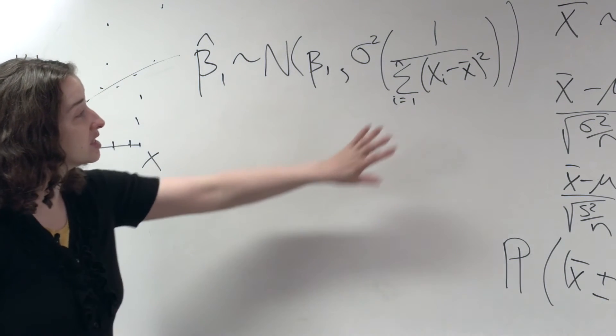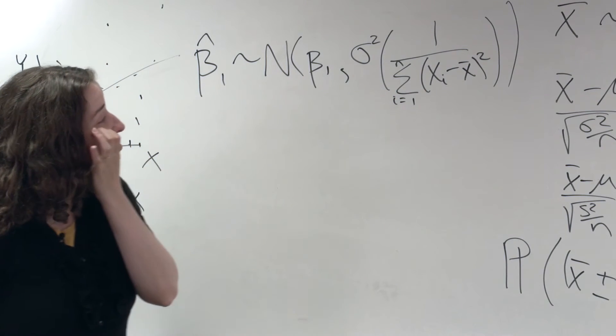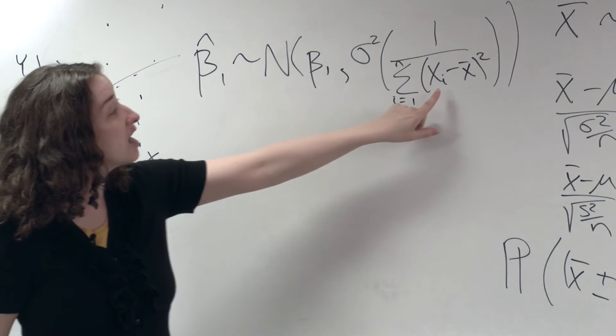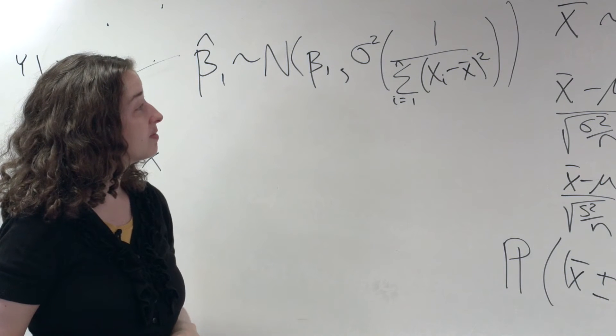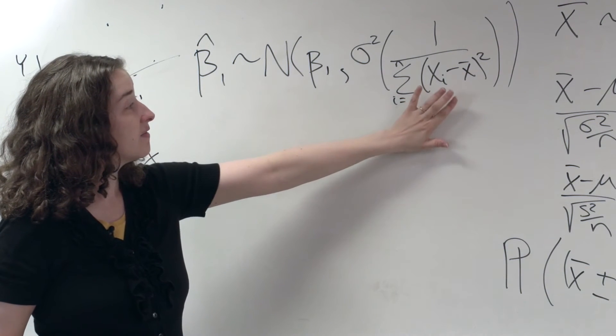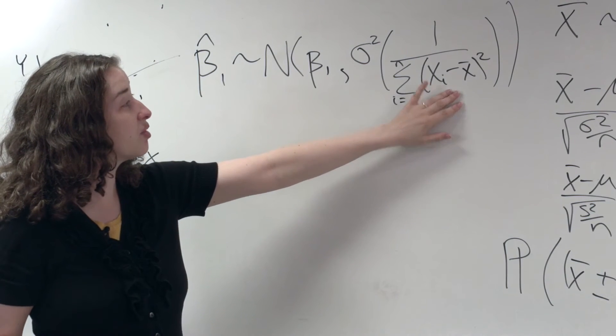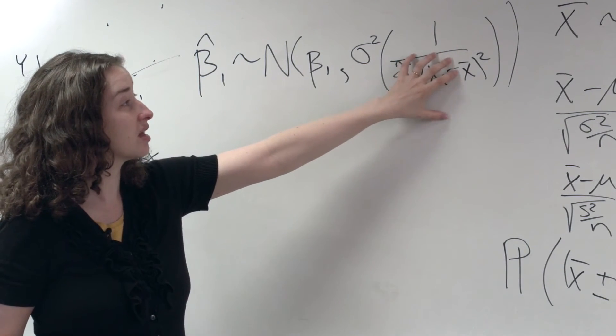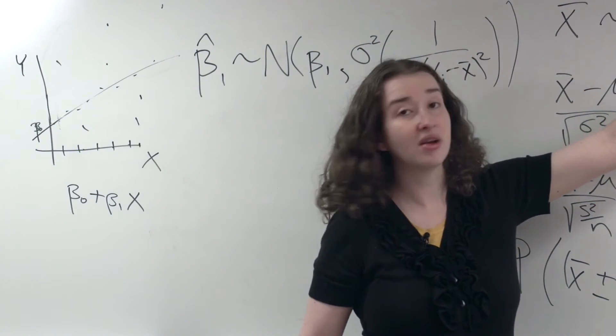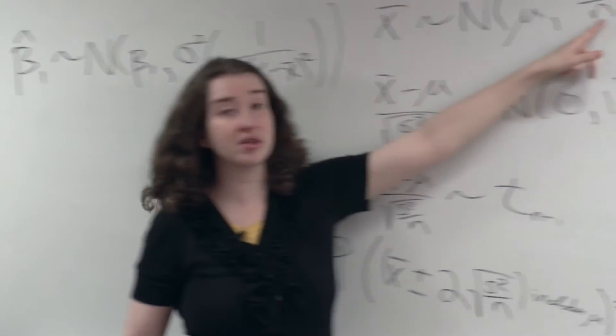What about this denominator? Well, first of all, note that this is the sum of the squared distances from the mean for each value of x. The more data points I have, the bigger this quantity will be. Just like this value here, the more data points I have, the bigger this denominator will be.